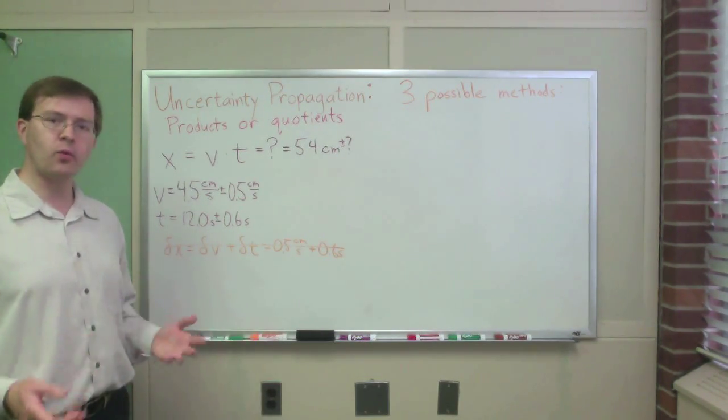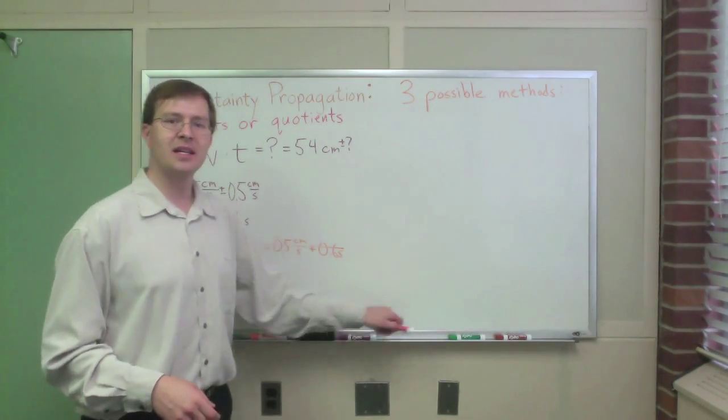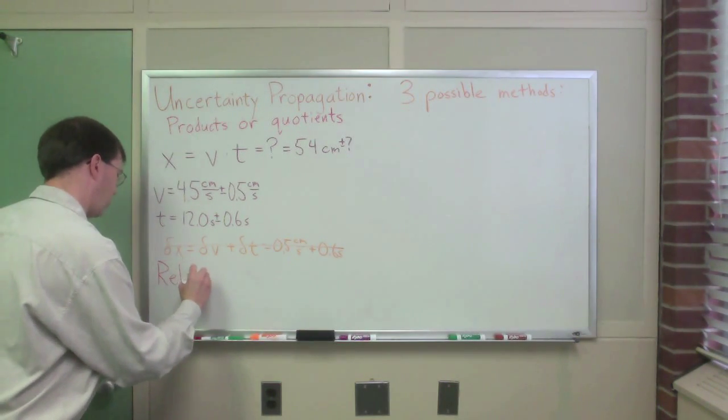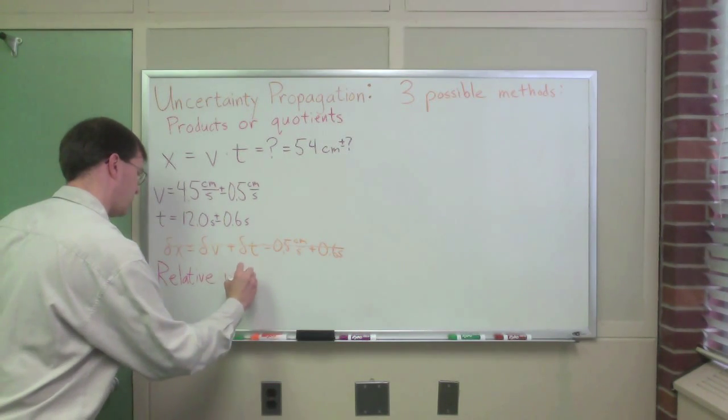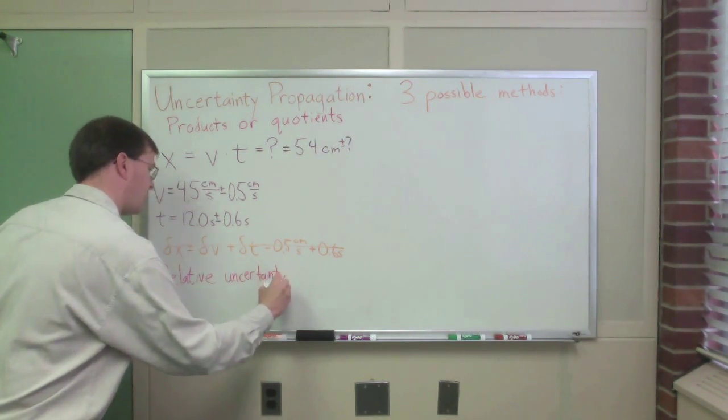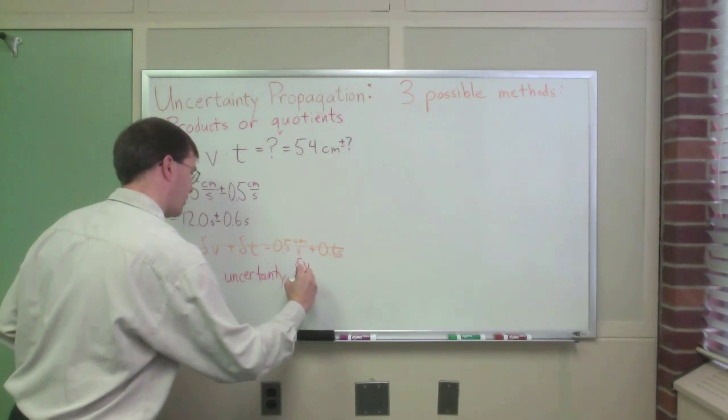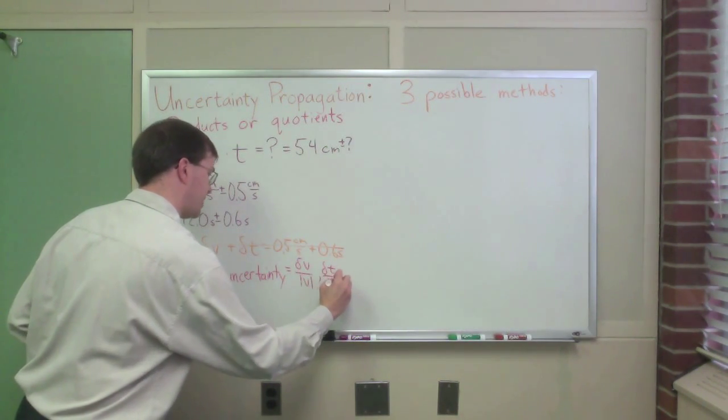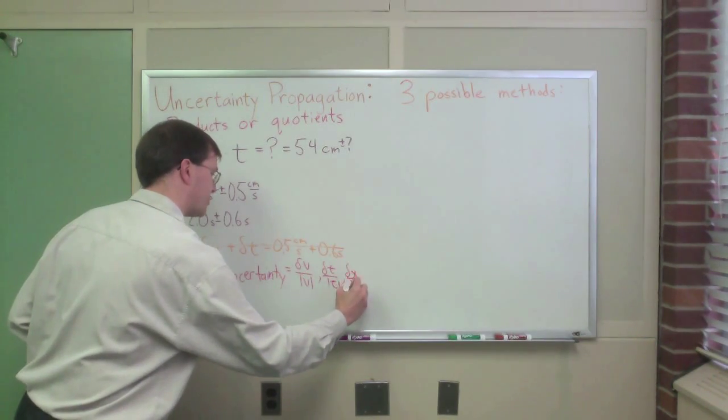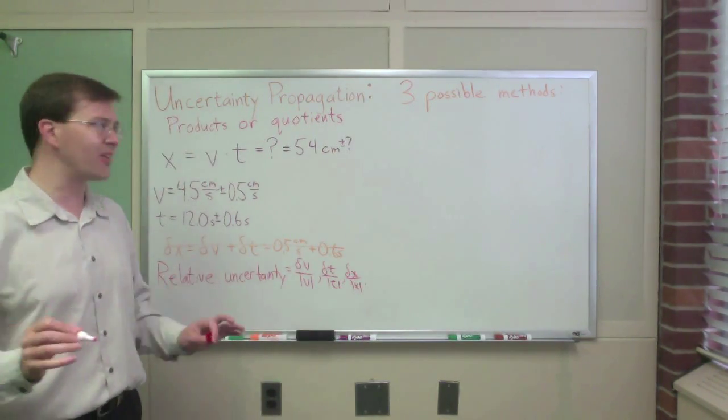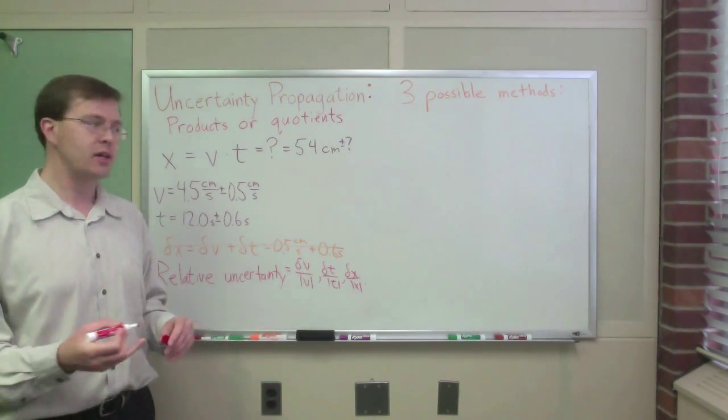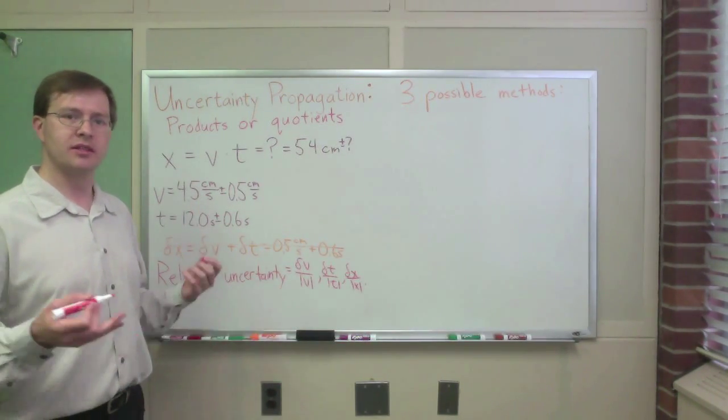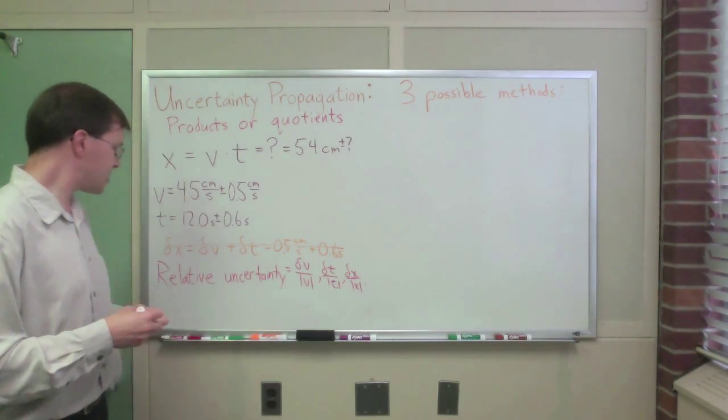It turns out that the right way to propagate uncertainties is relative uncertainty. Remember that relative uncertainty, or relative error, is the ratio of, say, delta v over the absolute value of v. Or delta t over the absolute value of t. Or delta x over the absolute value of x. All those absolute value signs are just to guarantee that the uncertainties we come up with are always positive quantities. Remember the plus or minus is sort of built in here. The delta x, the delta t, those all have to be positive numbers to represent what we want them to in these cases. So relative uncertainty of these ratios.